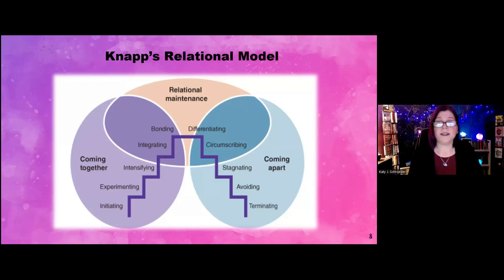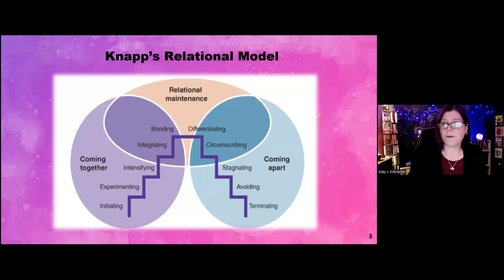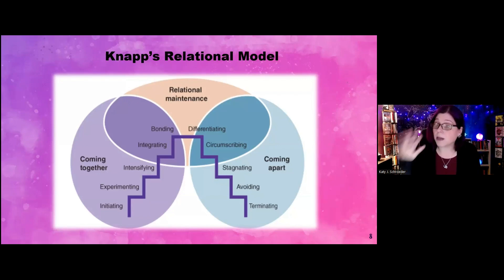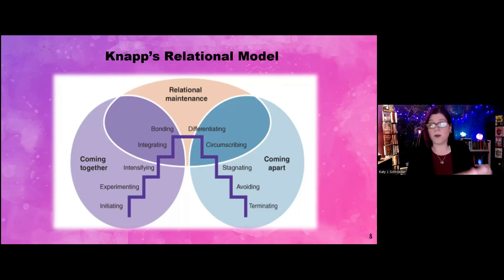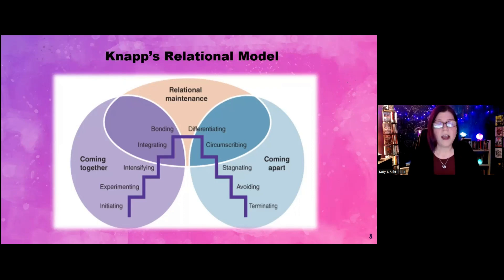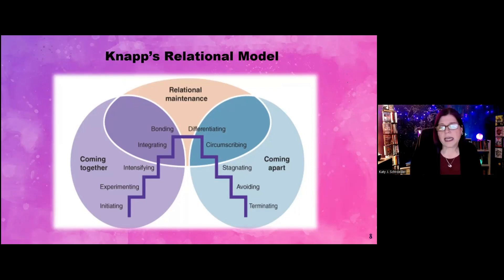People spend different amounts of time at each stage, and it's not a perfect up and down. If the relationship does come to termination — if you've had a best friend for 20 years — chances are you're hanging out indefinitely up there at the top with bonding and differentiating. Sometimes people move through these stages very quickly, sometimes very slowly, and they can bounce all over the place.